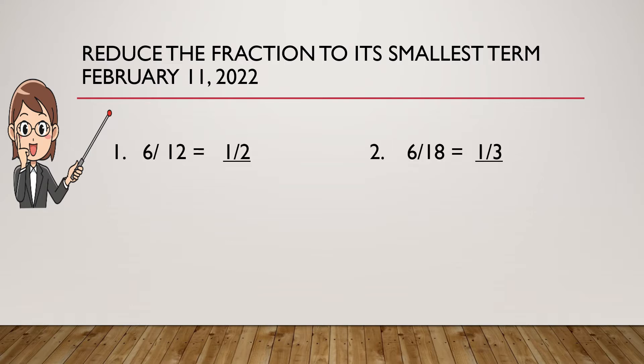So, there are answers now. 6 over 12 equals 1 half. All you have to do here is to divide the numerator and the denominator both by 6. So, the answer in number 1 is 1 half.